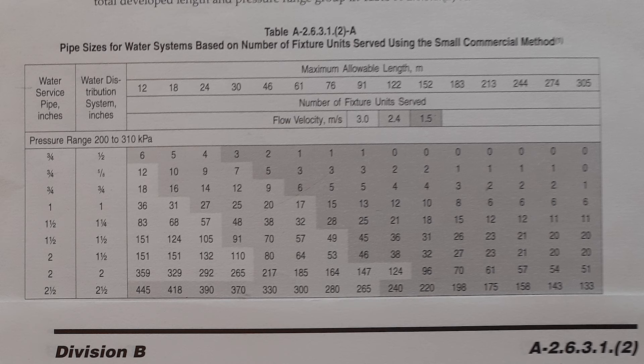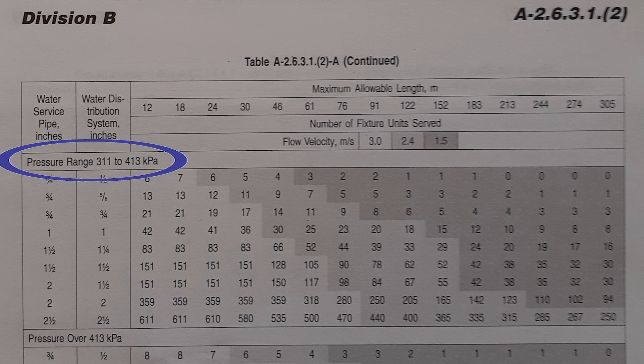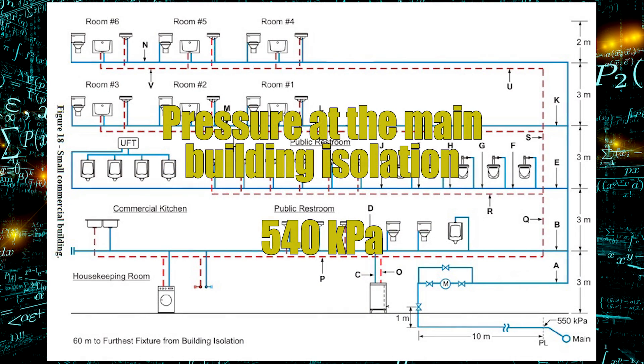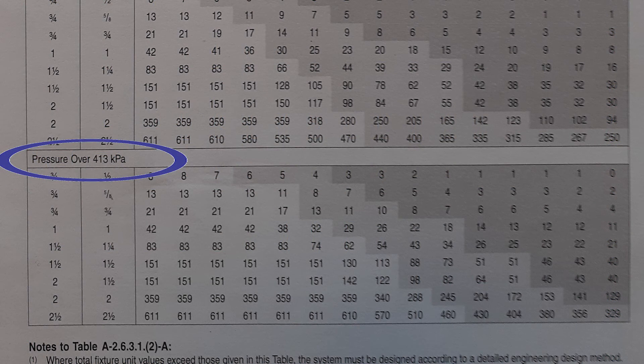There's three segments and it's broken down into pressure ranges. The smallest one is 200 to 310 kPa. The next one is 311 to 413 kPa. And the last one is pressures over 413 kPa. We need to select the right one. From our example earlier we have a pressure of 540 kPa so we should be using pressures over 413 kPa.